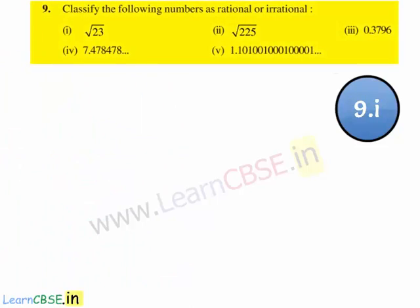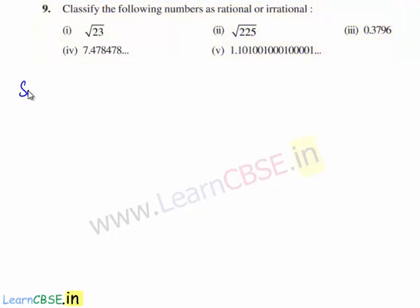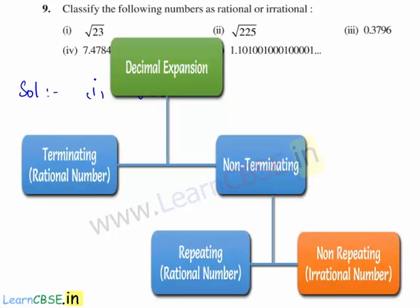Now let us move on to the 9th question. The question is: classify the following numbers as rational or irrational. The decimal expansions of numbers which are non-terminating and recurring, or terminating, are called rational numbers. The decimal expansions of numbers which are non-terminating and non-recurring are irrational numbers.